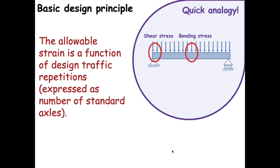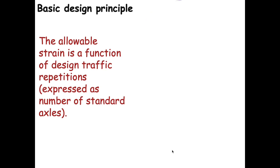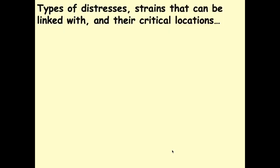What is unique about pavement design compared to many other civil engineering infrastructure designs is that the allowable strength value is a function of the design traffic repetitions — it does not assume a fixed value. In a beam design, we have fixed allowable bending stress and shear stress values. But for pavement, depending on how many traffic repetitions are expected, the allowable strain value will be different.